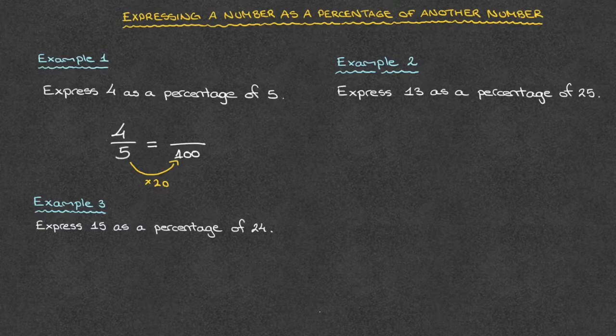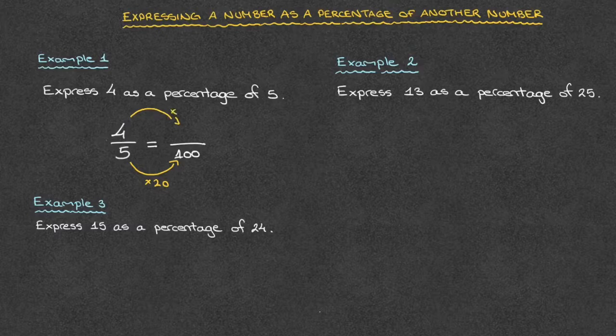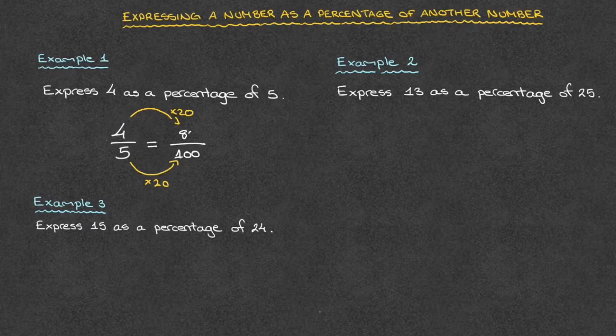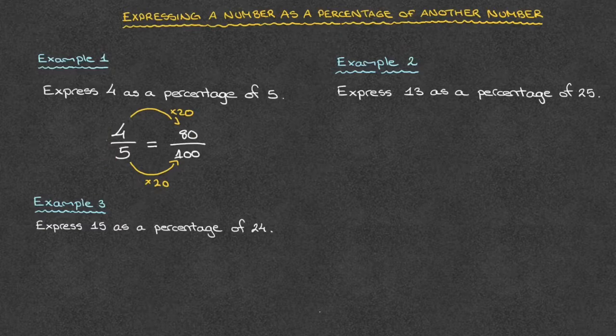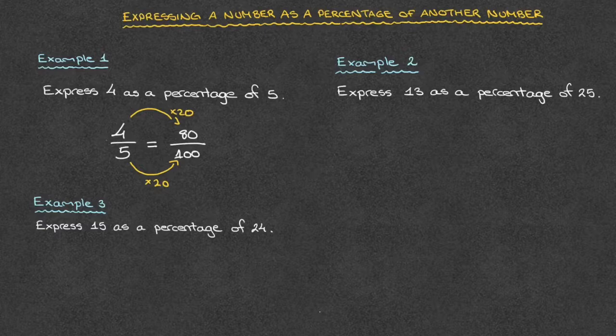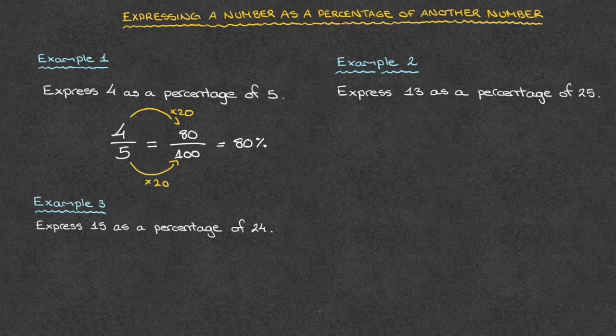But since we multiplied the bottom of the fraction by 20, we need to multiply the top by 20 as well. So that would be 4 times 20, which is equal to 80. So 4 over 5 is equivalent to 80 over 100. And 80 over 100, well, that's 80%. So we can state our answer as 80%. And that's the answer.